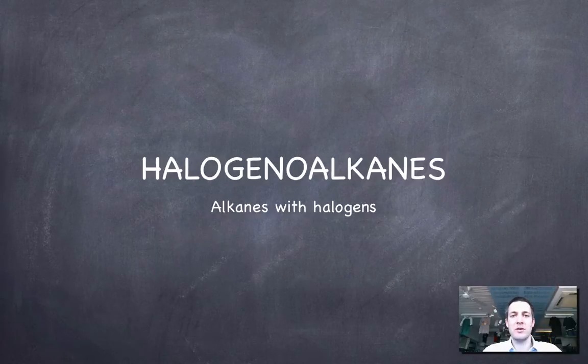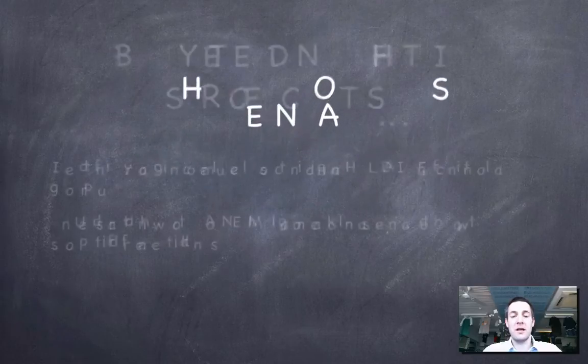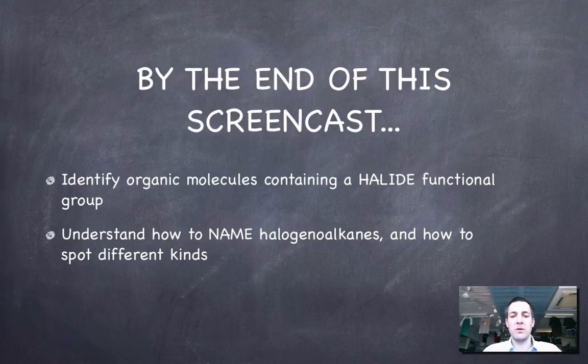We've looked at all the reactions of alkanes and alkenes and those of alcohols. We're now going to start looking at molecules called halogenoalkanes and we're going to then in the next couple of films see how they react with things.